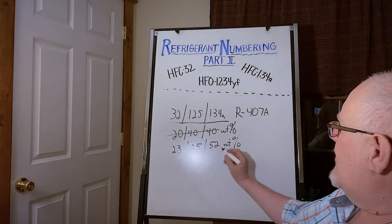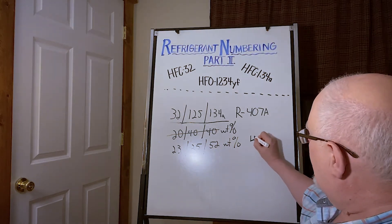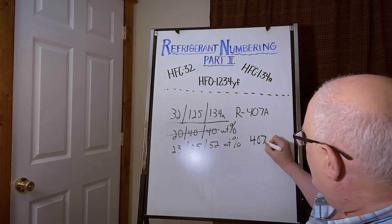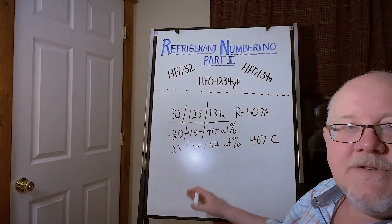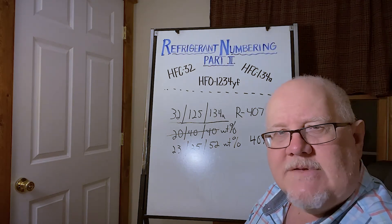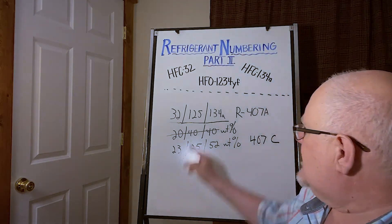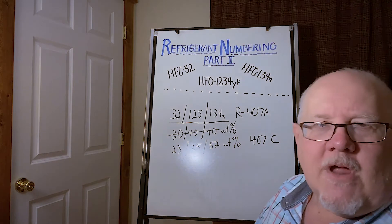But this 23, 25, 52 weight percent was given a 407C designation. And then there's D, E, F, G, H, ongoing. I'm not sure how high the 407 series is now, but every time it's the same three components, different combination.